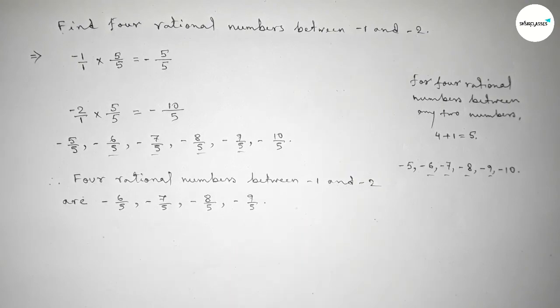So this is the process to find out four rational numbers between -1 and -2.